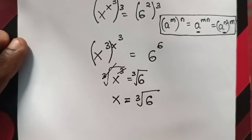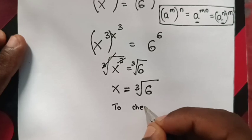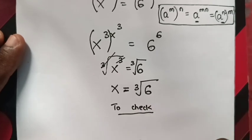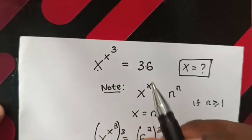This is the value of x. Now, to check if our answer is correct from our problem, x^(x^3) = 36.